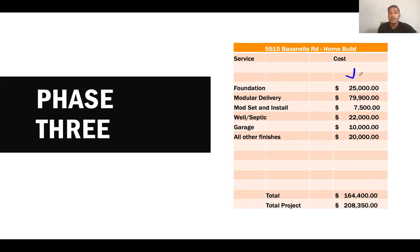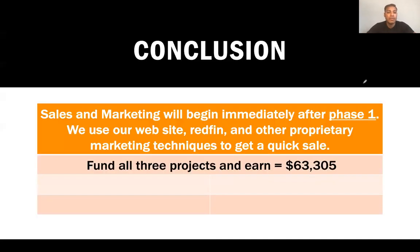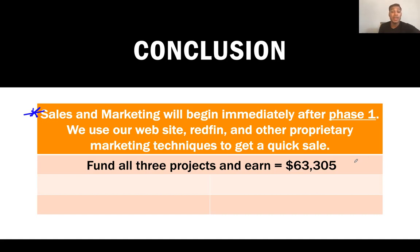All of these things are going to be getting done in order, and as they get done, you as the bank or lender would wire those funds when our team is ready. In conclusion, I want you to remember this: the sales and marketing will begin immediately after phase one. We've done three projects like this already, and they have all sold before they're done being built. We've gotten the contract and the $10,000 EMD. Once we find a partner who would like to fund all three, that's a potential $63,305 return without you having to do anything.